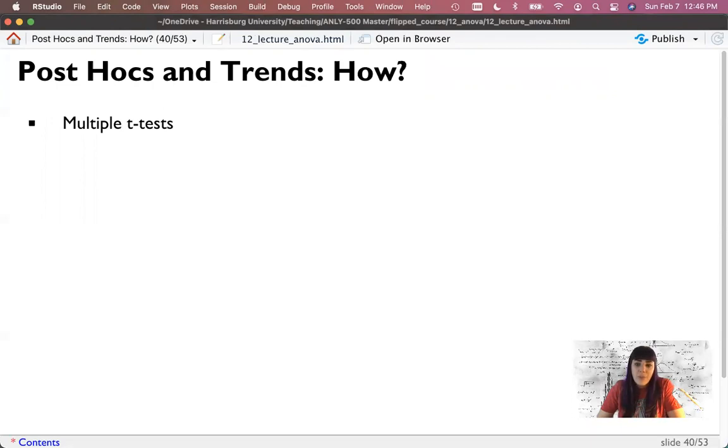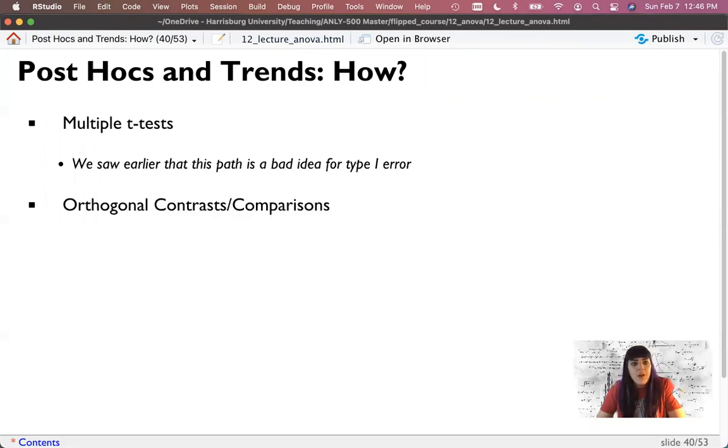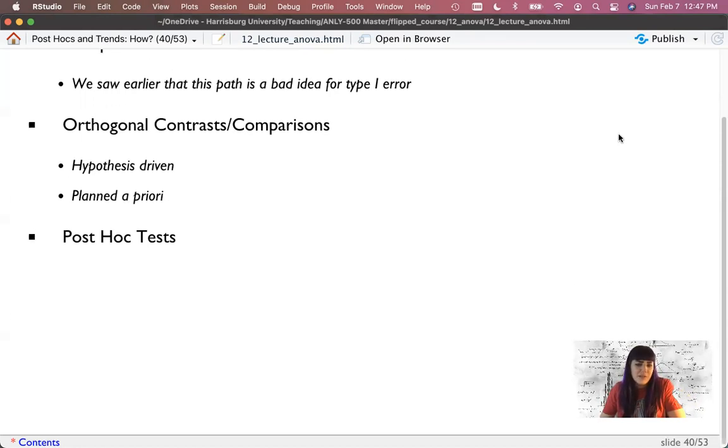So how do we do that? Well, we could do multiple T-tests. But if you remember the beginning of this lecture, I told you that was bad and you shouldn't do it. Well, we could still do that, but we have to find some way to control for type one error. We could run what are called orthogonal contrasts or comparisons. This is generally hypothesis-driven. Or we could run what are called post hoc tests, which are actually effectively either a T-test or an F-test. And this is where you compare every mean to every other mean. Now, this is the most common thing that people do, because why would you have groups if you're not interested in comparing them?